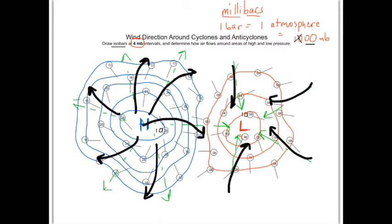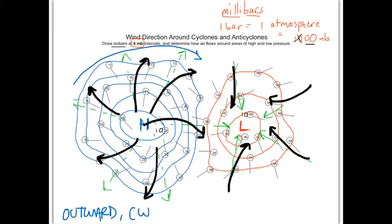So we have these two pressure areas — one high and one low — and wind is going to swirl in one direction or another. On the left-hand side, air flows outwards, and that direction is clockwise. We call this an anticyclone — A-N-T-I-cyclone.